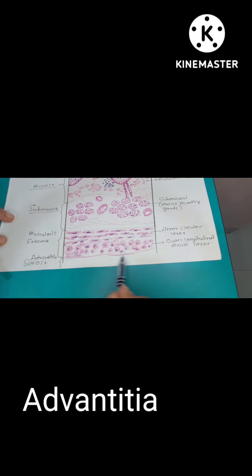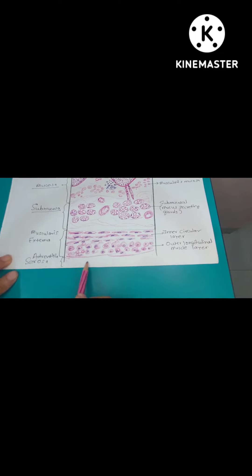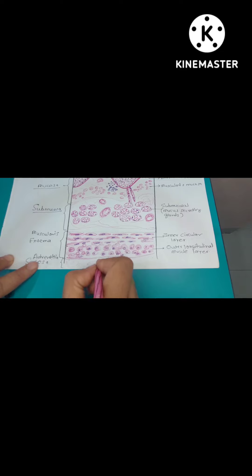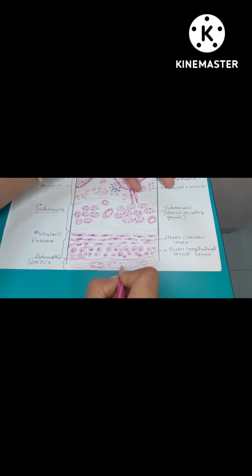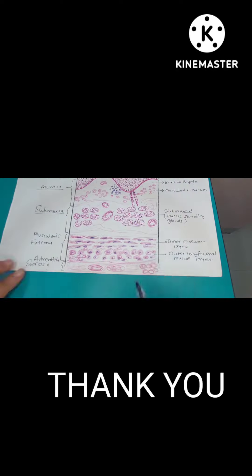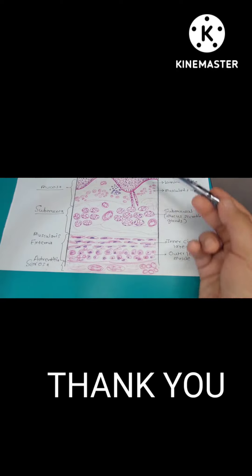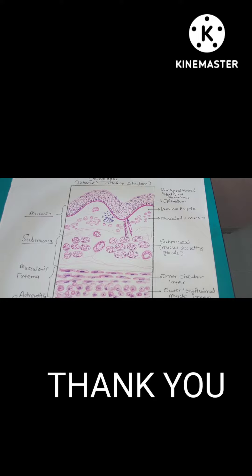The last layer of the esophagus is the adventitia or serosa, which is a connective tissue layer showing blood vessels. This completes the schematic diagram of the histology of the esophagus.